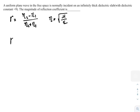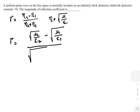Therefore, I can write gamma equal to, in place of eta 2, I will write root over mu 2 by epsilon 2 minus root over mu 1 by epsilon 1 by root over mu 2 by epsilon 2 minus root over mu 1 by epsilon 1.